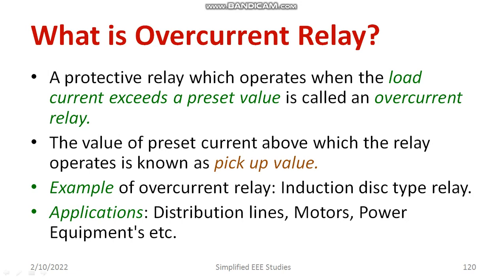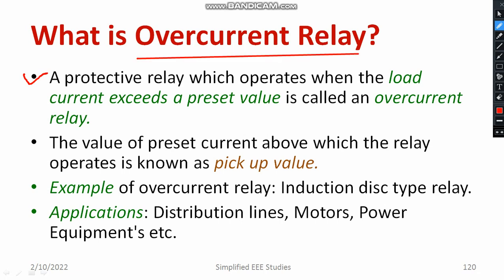First of all, let us assume that there is a preset value. The preset value means it is the safest value of current. When you connect a load, if the load current exceeds the preset value, definitely a relay is going to operate. Such relays are known as overcurrent relays. There are different types: electromechanical overcurrent relay, numerical type overcurrent relay, and static overcurrent relay. Numerical overcurrent relay will have a program and operates based on that program. Electromechanical overcurrent relay works based on settings — some initial PS settings are required — and it has moving parts.